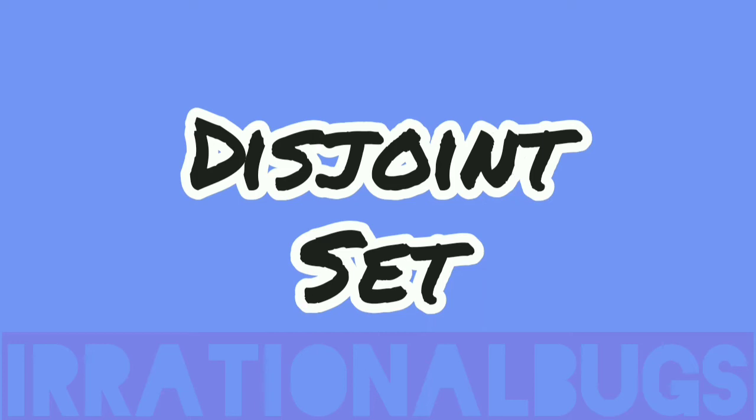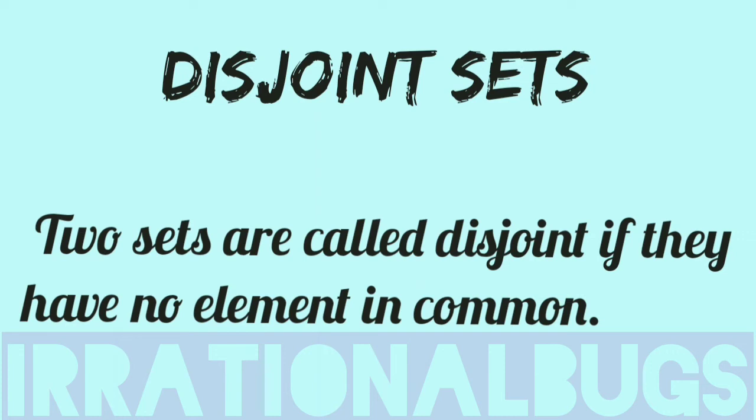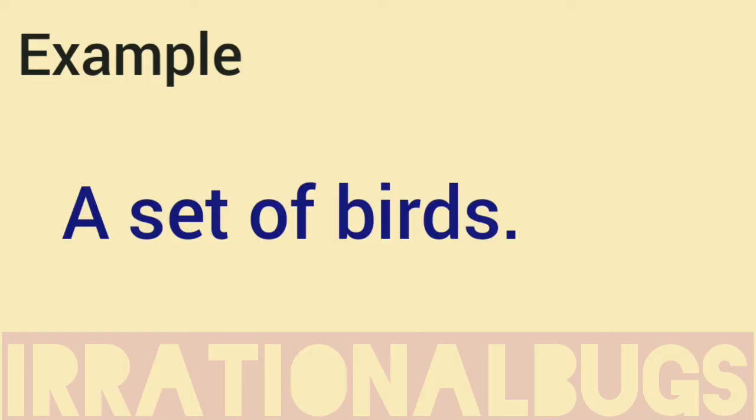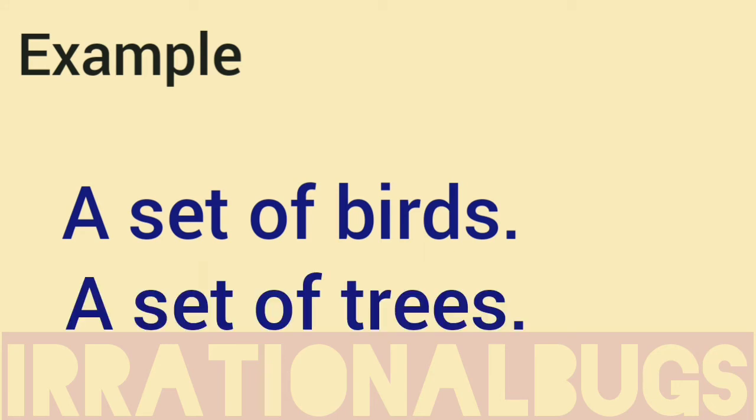Next, we have disjoint sets. Two sets are called disjoint if they have no element in common. This is opposite of joint. In joint sets, at least one element should be common. In disjoint, not even one element is common. Example: a set of birds and a set of trees. Birds and trees have nothing in common, so these two sets are disjoint sets.